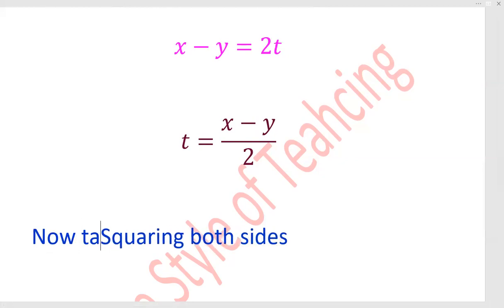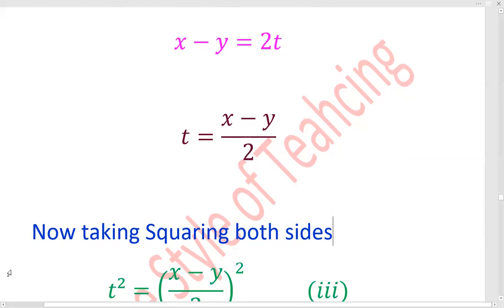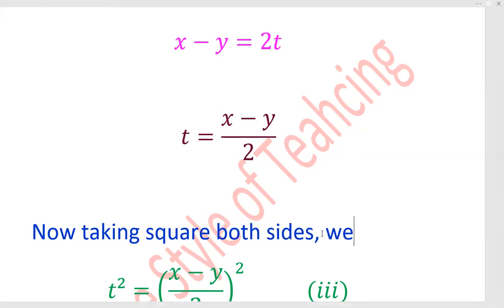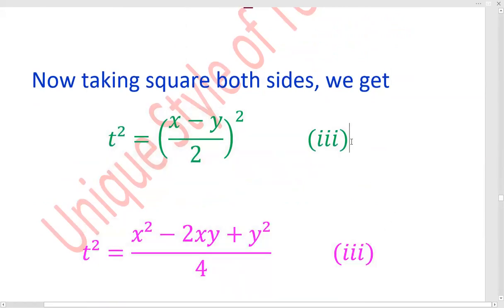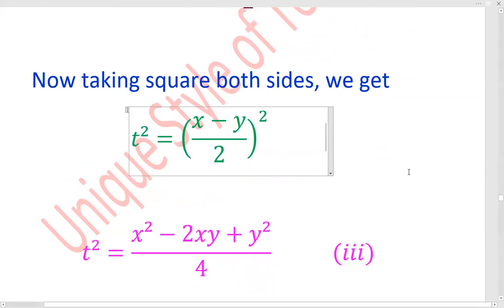Now taking square both sides, we get t square is equal to x minus y upon 2 whole square. t square here. By using the formula, it will be x square minus 2xy plus y square divided by 2 square, which is 4.